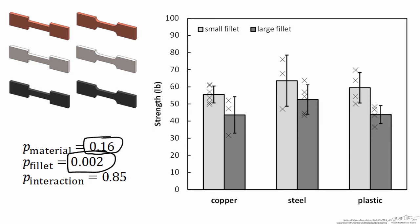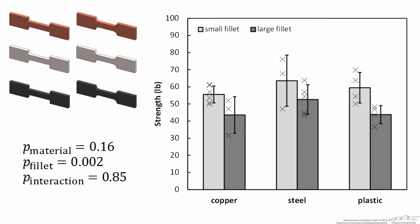In that data set, there is no interaction between the three materials — the large fillet decreased the strength by the same amount for copper, steel, and plastic in all three cases. So there's no interaction. You might be asking: what does it take to have an interaction? What would that look like? How could we generate a simulated data set in which p-interaction is a small value?